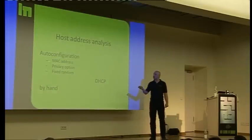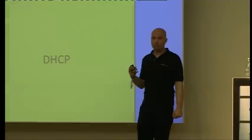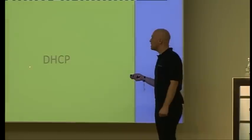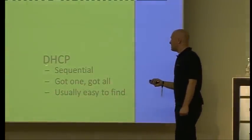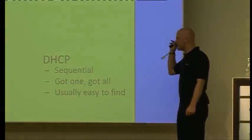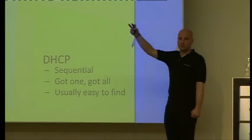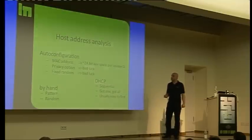Privacy option means it will be random, it will be regenerated once a week, so not very useful for us. And something like totally random fixed stuff. By hand, it's either clear pattern or it was random. DHCP, even on IPv6, hands out the IP address sequential. If you know the starting point, very easy to enumerate the rest. If you got one, you got all.